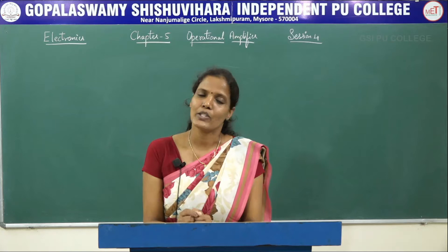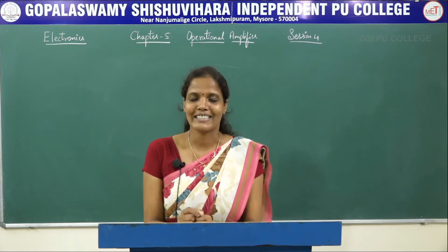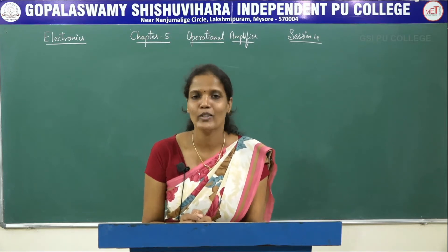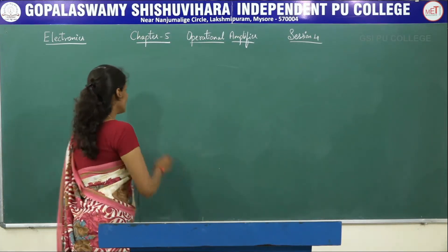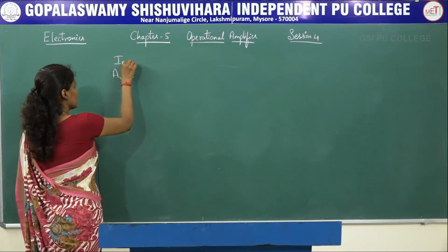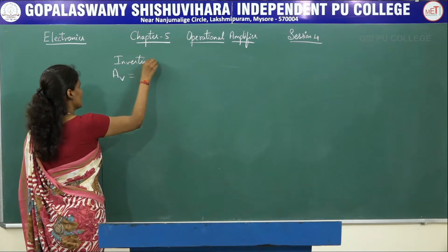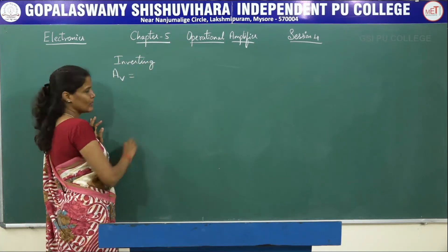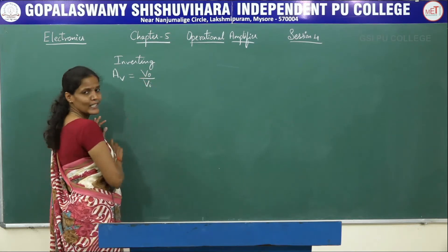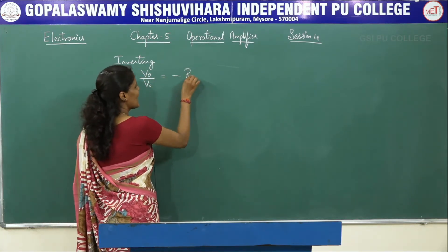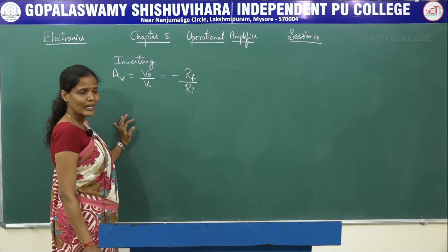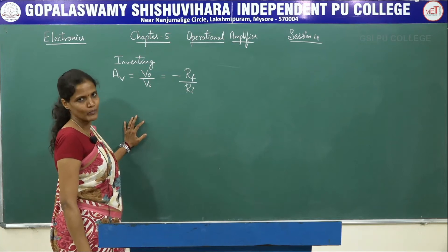In today's session, we will be dealing with voltage follower. Before that, let us try to glance at the voltage gain equation of an inverting and non-inverting operational amplifier. The voltage gain, denoted by Av, for an inverting operational amplifier, Av = V0/Vi = -Rf/Ri. Rf is the feedback resistor and Ri is the input resistor.